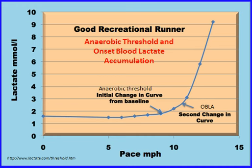OBLA refers to the point at which lactic acid is accumulating exponentially, and if the athlete continues at this pace, they will have to slow down extremely quickly. At this point, the body is unable to remove the amounts of lactic acid being produced. Some research says that OBLA takes place at about 4 millimoles per litre of lactate in the blood, but it can be different for different athletes — a range of 2–6 millimoles, with some people outside this range, is a guide as to when OBLA can occur.